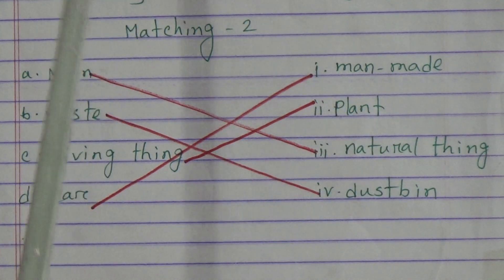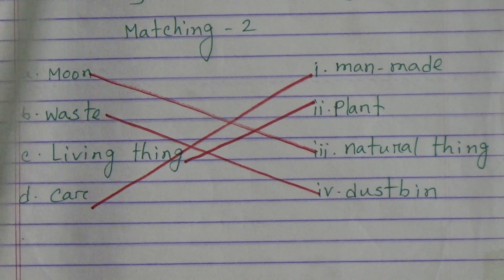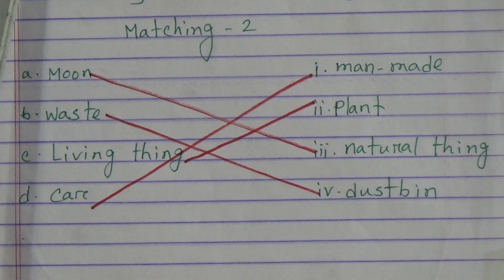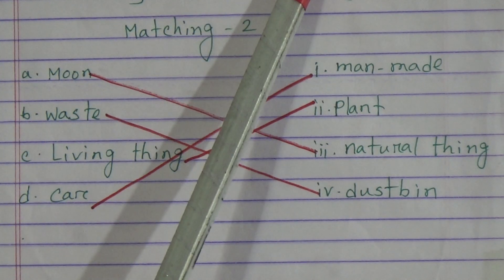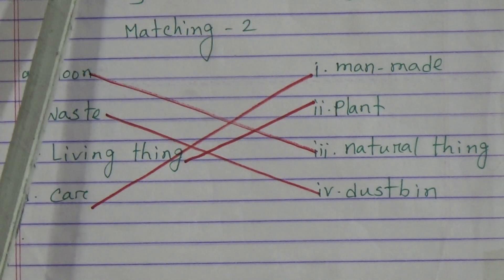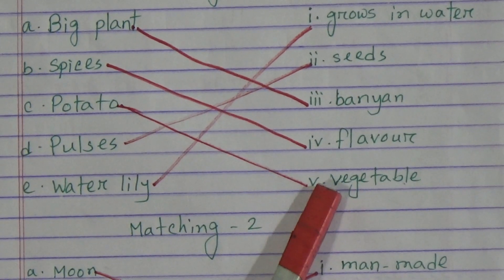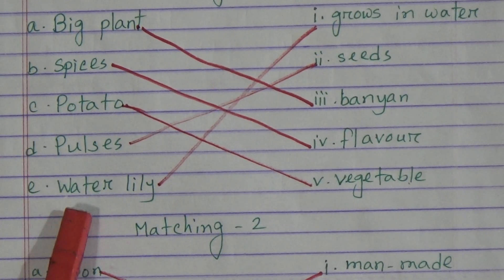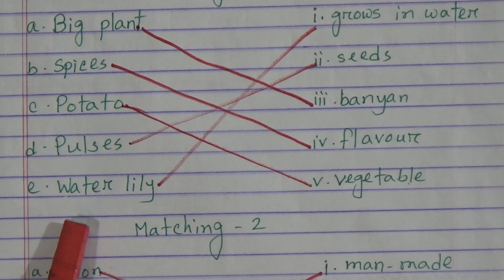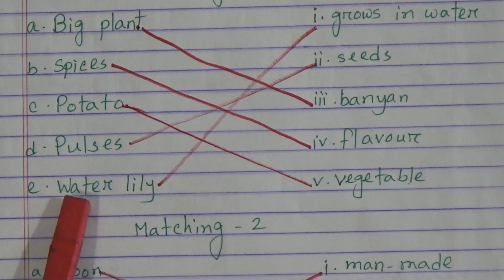Let me repeat Matching 1. Big plant will be matched with banyan — number A matched with number 3. Spices will be matched with flavor — B matched with 4. Potato is a vegetable — C matched with number 5. Pulses are seeds — D matched with number 2. Water lily grows in water — E matched with number 1.